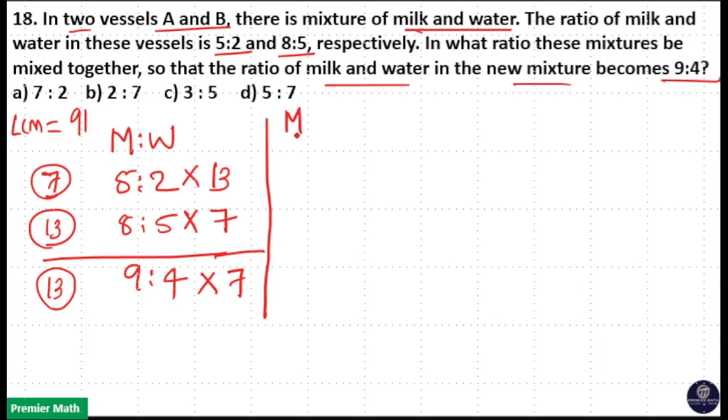I am taking milk part in first vessel. That is, 13 into 5 is equal to 65 is milk part in first vessel. 7 into 8, 56 is the milk part in second vessel. In the final vessel, that is final mixture, new mixture, 7 into 9, 63 is the milk part.